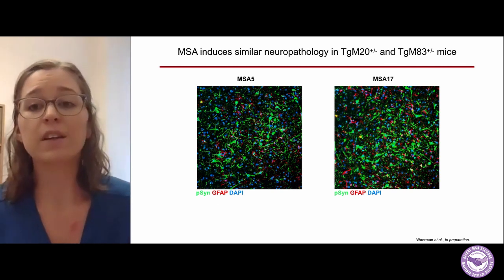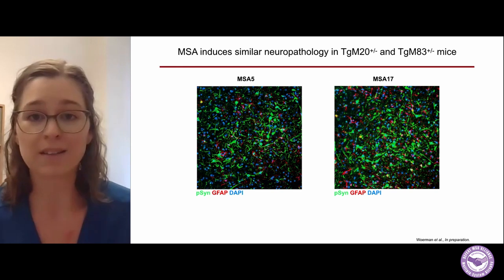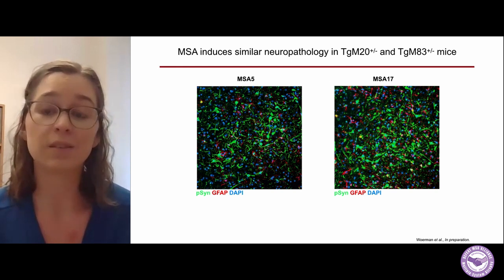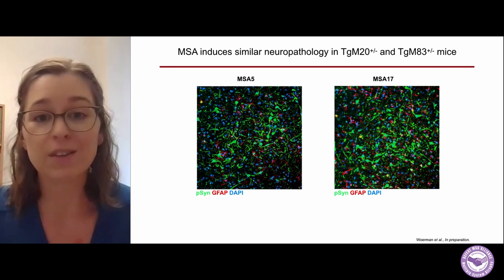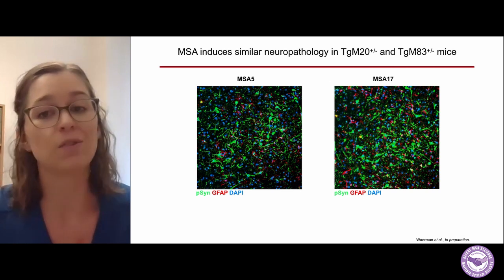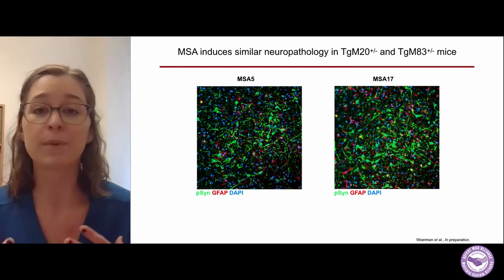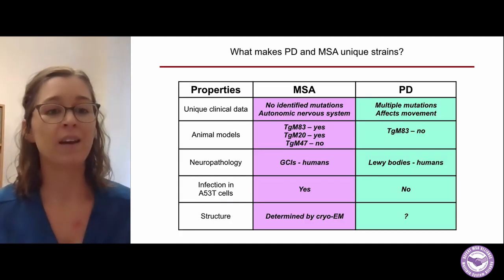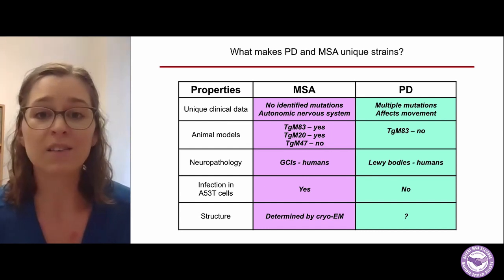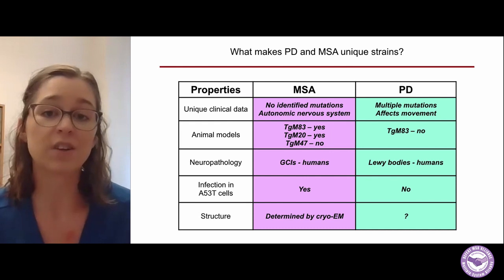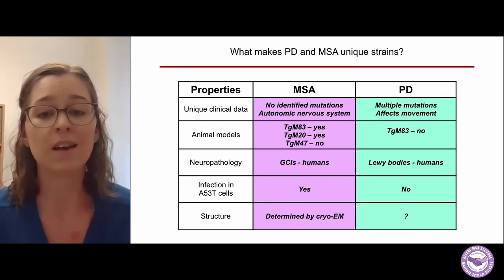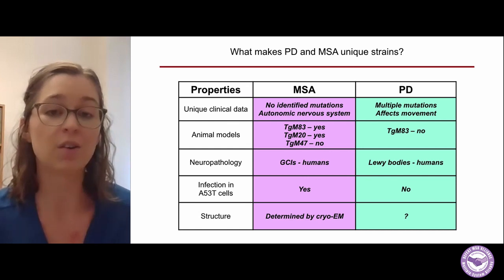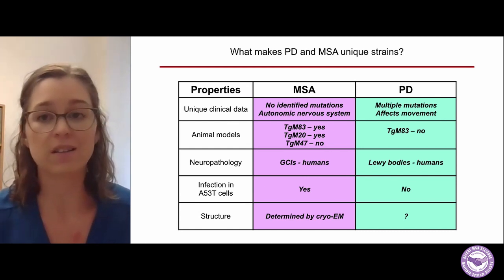The M83 mouse model has been commonly used to study MSA, and the neuropathology between the wild-type M20 mice and the A53T mice is very similar, as shown here when comparing phosphorylated alpha-synuclein pathology between the two. This suggests MSA is behaving the same way in two separate mouse models. We've now grown our arsenal for studying MSA: two mouse models that MSA transmits disease to, both through the A53T mutation and the wild-type mice, and importantly, E46K blocks MSA transmission when present in either the mouse model or our cellular assays.